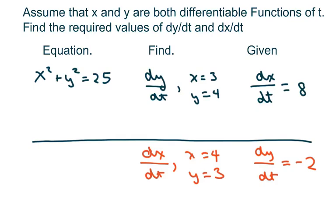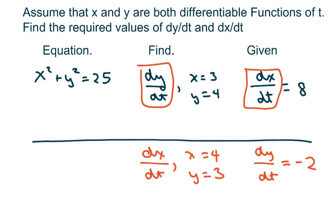Hi everyone! Assuming that x and y are both differentiable functions of t, we're going to find the required values of dy/dt and dx/dt. This is our equation and the first thing we're going to do is differentiate it.